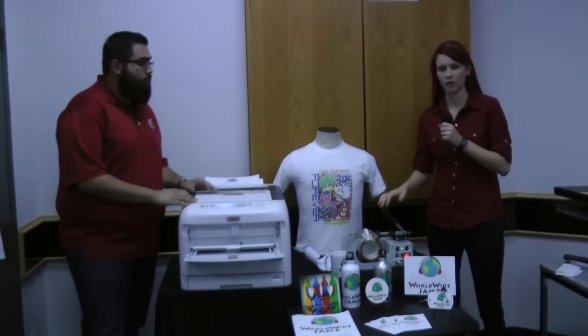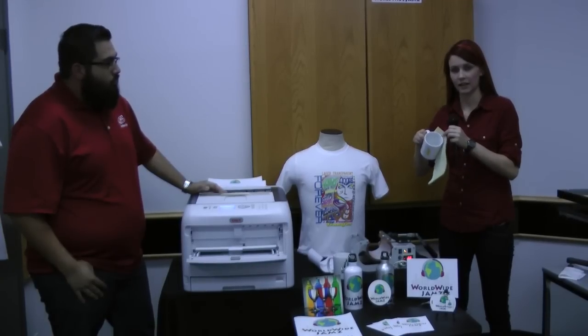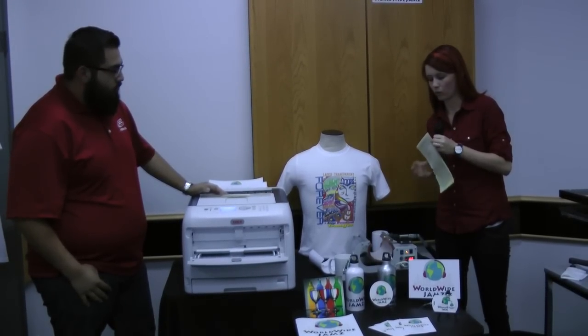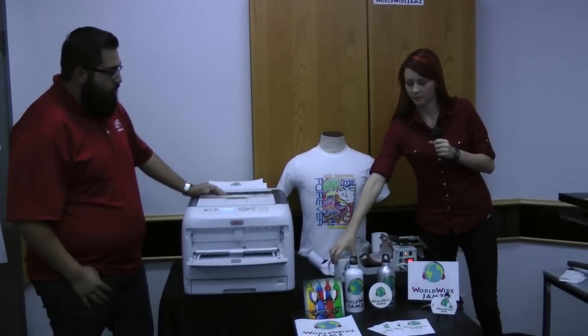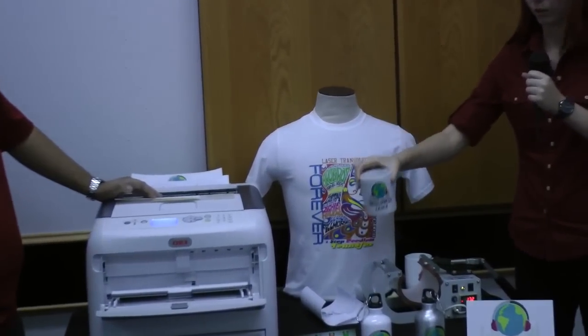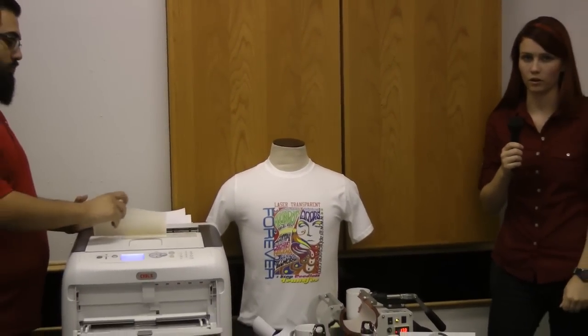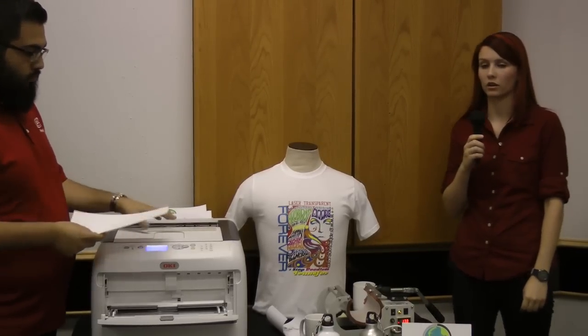Coming back now our mug is done pressing. So we're going to take out our mug and set it aside to cool. Now we have one mug that's already done pressing. So this is what it looks like completely done. Now we're going to move forward and show you printing with our polysign paper. So we're going to actually print two sheets. One with our white and one with our clear.